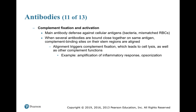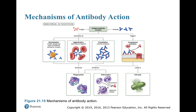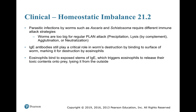Complement fixation means activating the complement cascade. Some antibodies are very good at doing that — it triggers the complement cascade, which leads to cell lysis and other things, including amplification of inflammation and opsonization. So when an antibody-antigen complex forms, we can get rid of the antigen by neutralization, agglutination, precipitation, or complement activation — many of which enhance phagocytosis and ultimately lead to increased inflammation and cell lysis. Parasitic infections by worms, such as Ascaris or Schistosomiasis, require different immune strategies — worms are too big to engulf with macrophages. In this case, they are coated with IgE antibodies, which causes the release of histamines and other toxins that kill the large worms from the outside in.